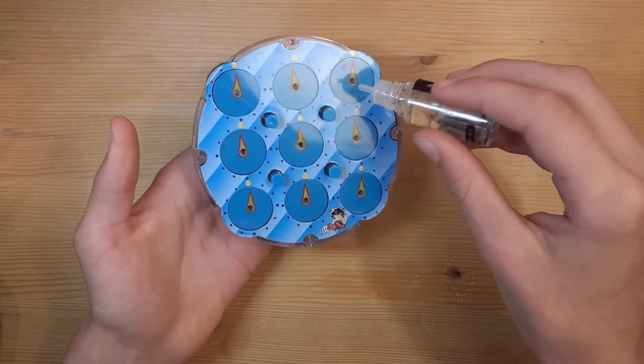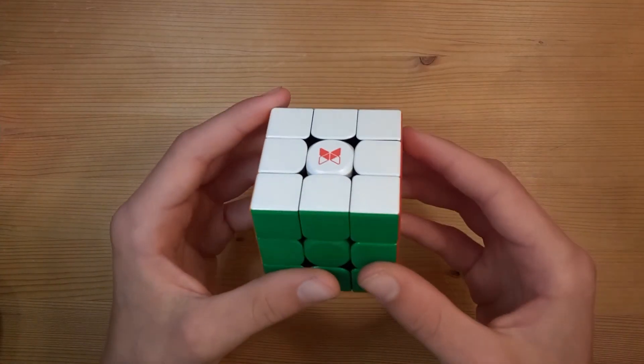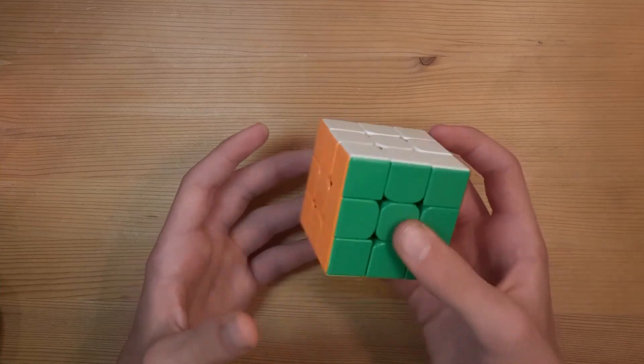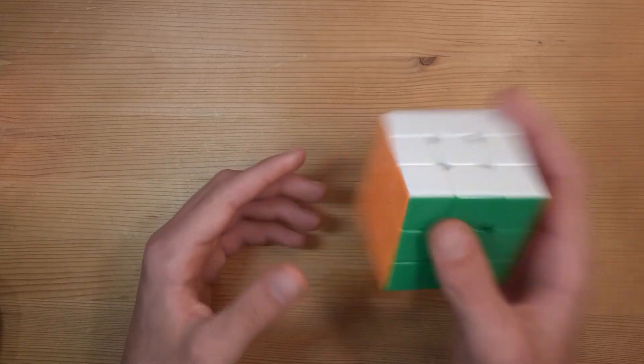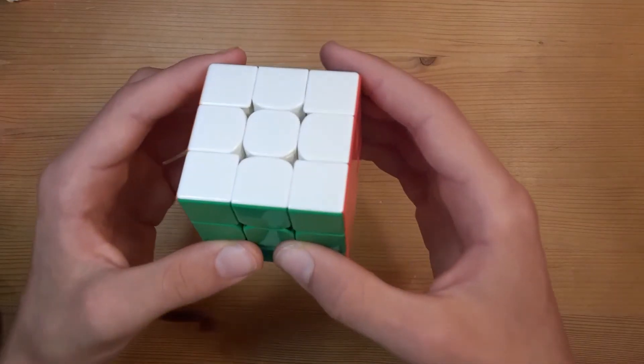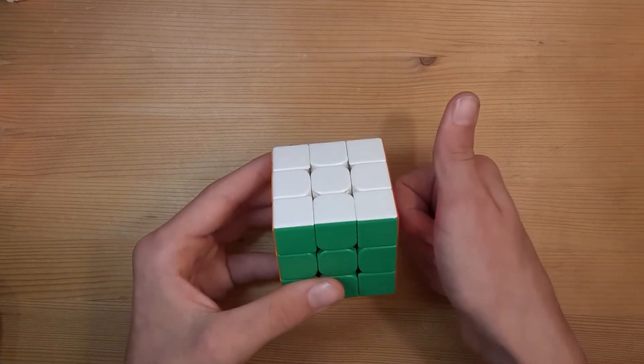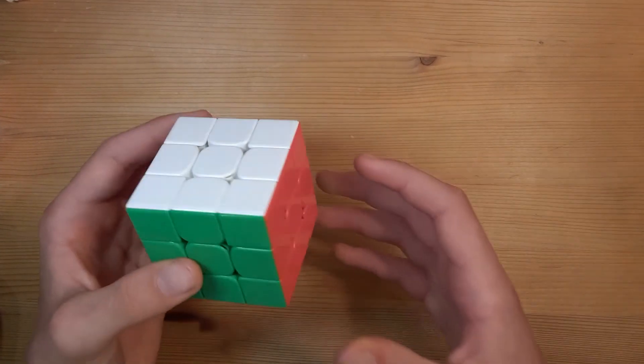Wait, maybe if I just... and that is pretty much it. That's how Rubik's cube mechanics work for the 3x3. If you want to learn how to take one of these things apart, then just check out this video right here. If you liked the video, leave a like, subscribe to help me out, and I will see you next time.